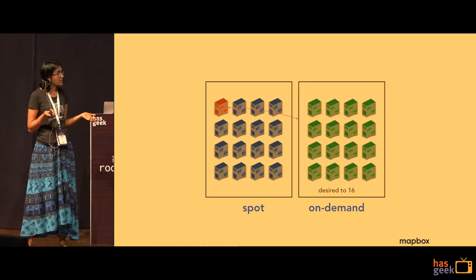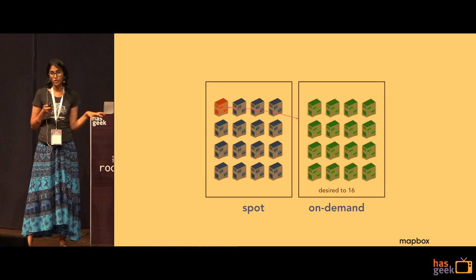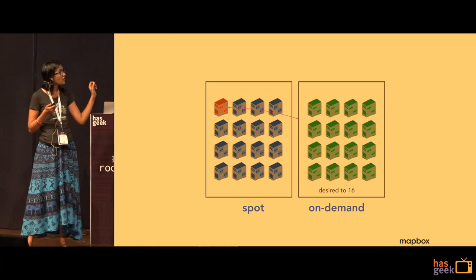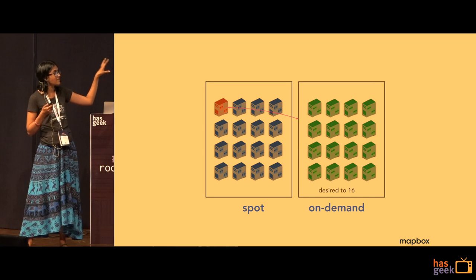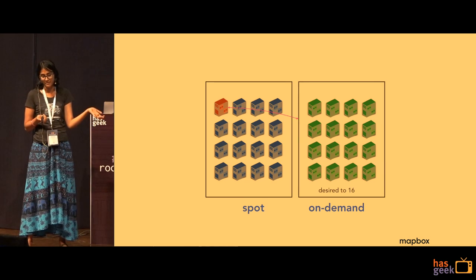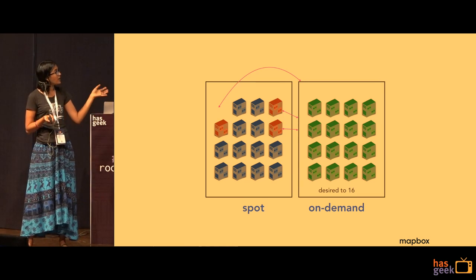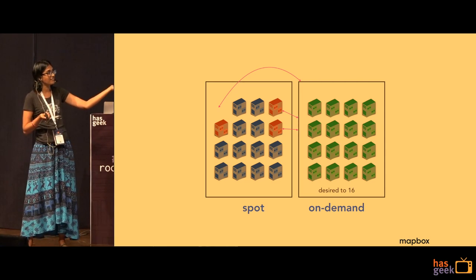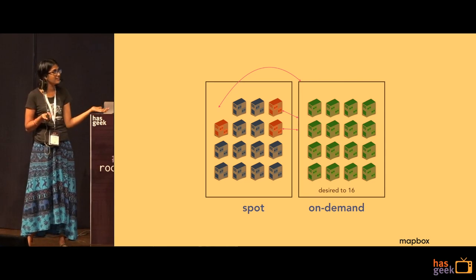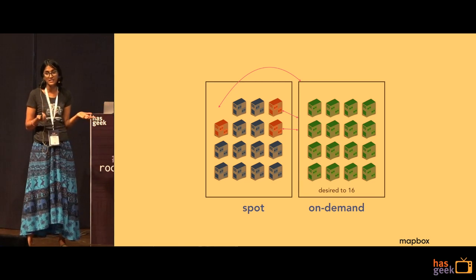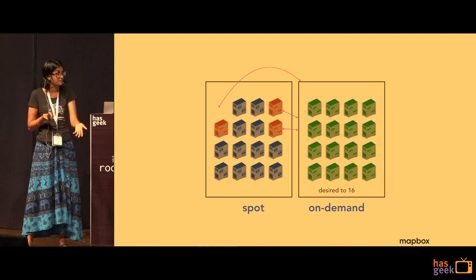Our first strategy to counter this was to aggressively scale up the on-demand auto-scaling group any time we encountered a spot termination. So if there was even one instance at risk of termination, we would still scale the on-demand group to full capacity. Similarly, when more instances found out they were at risk of termination, they would simply set the desired to 16 — full capacity — so your traffic still has enough servers to serve responses.